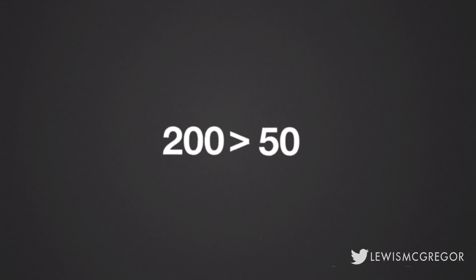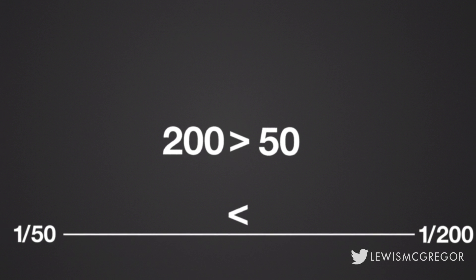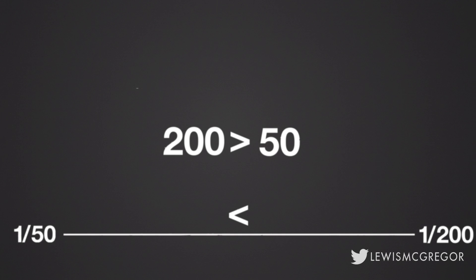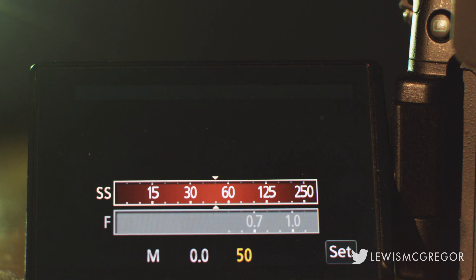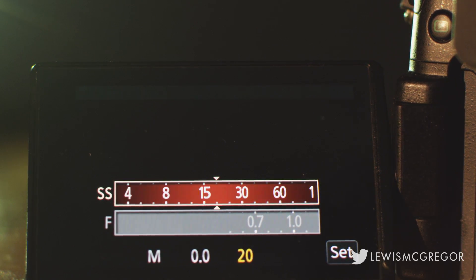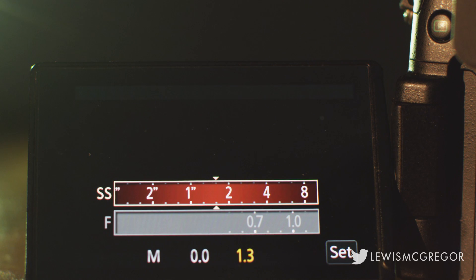It can come across as counterintuitive because 200 is a larger number than 50, and because of this, it would seem like you're exposing your image longer. However, instead of thinking of these numbers in terms of length, think of them in terms of speed. Going 200 miles per hour is faster than going 50 miles per hour. Another way to remember which speed is faster is to note that the closer your fraction is to 1 — for example 1 over 24, 1 over 12, 1 over 6 — the longer your shot is being exposed for.